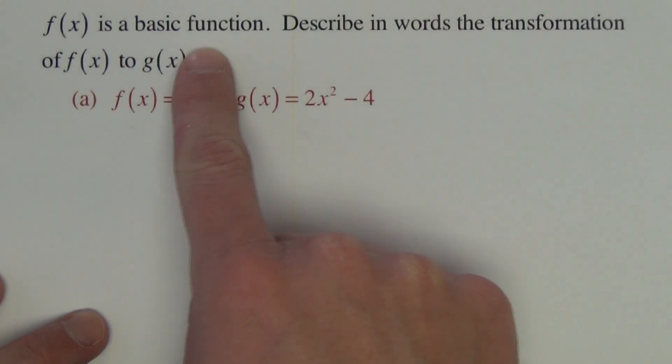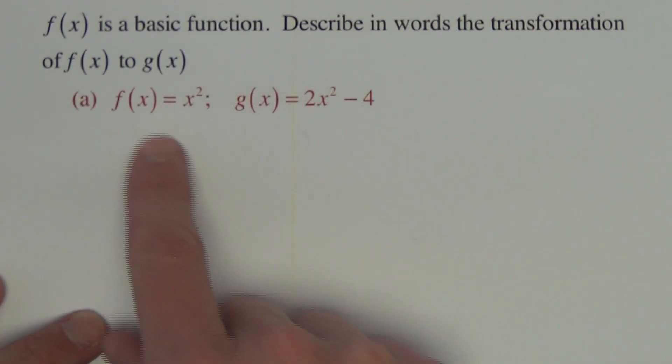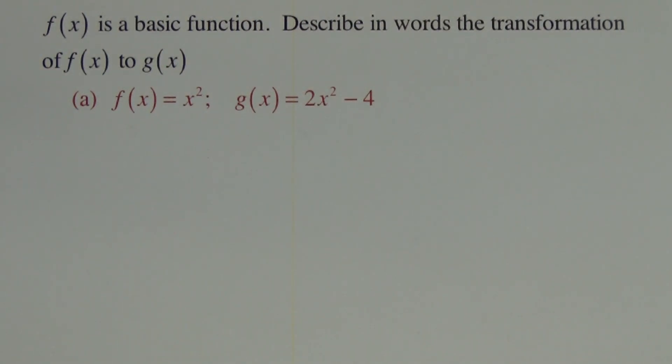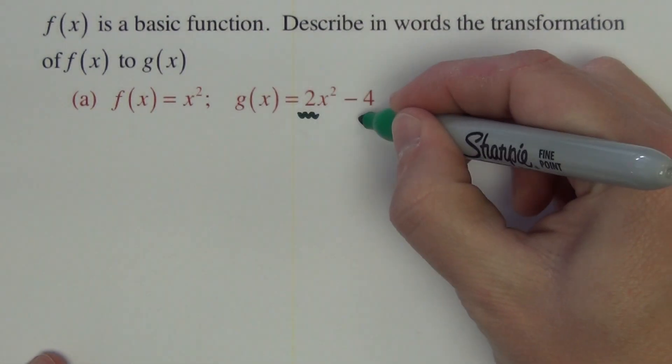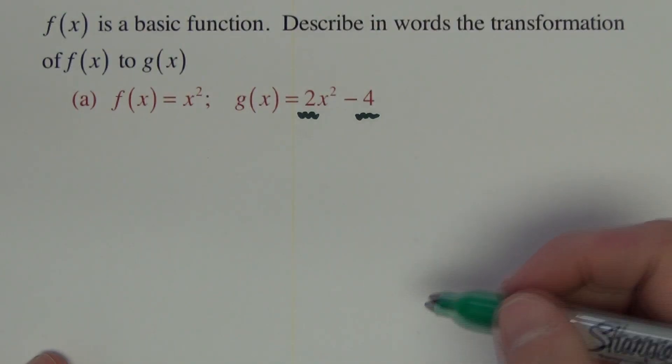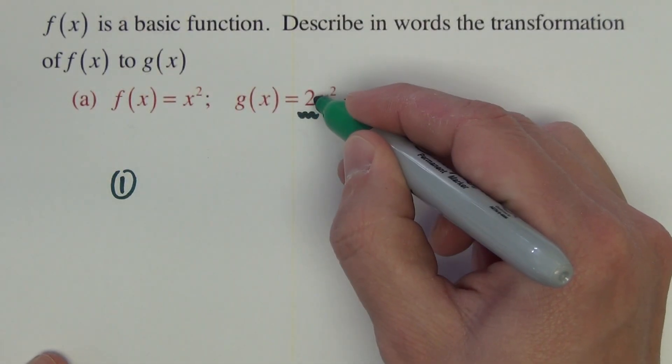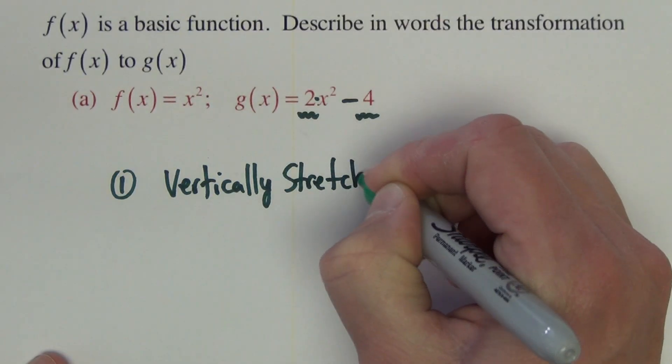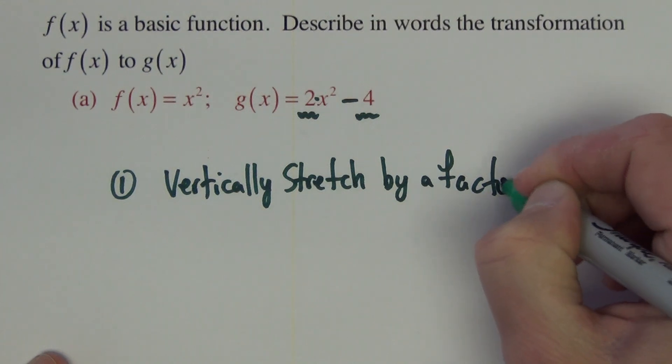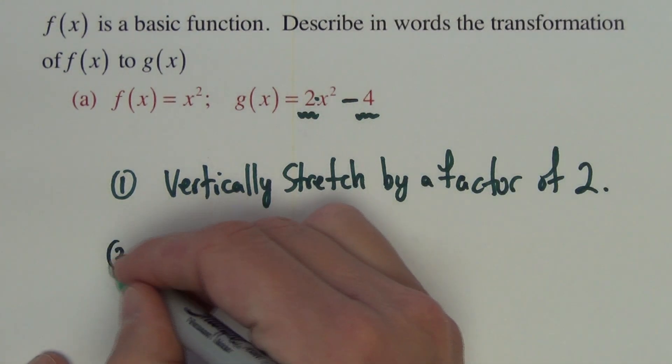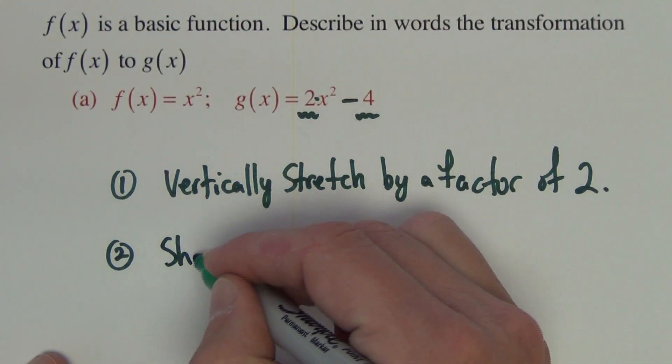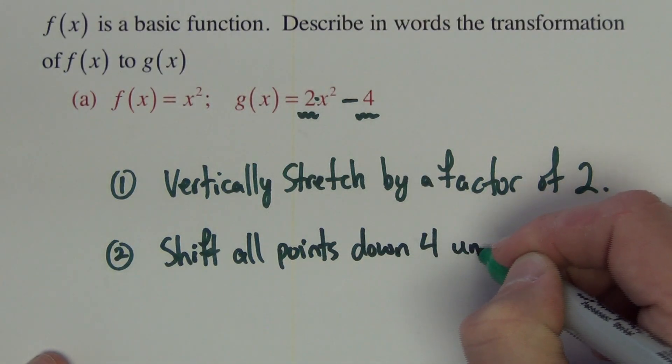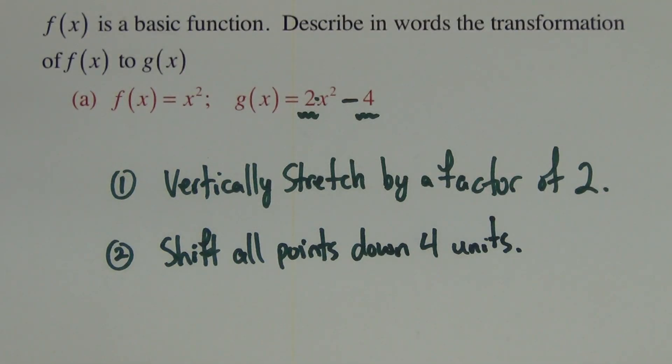This first problem says that f of x is a basic function. Describe in words the transformation of f of x to g of x. Our basic function is x squared. Our new function is 2x squared minus 4. We have to be able to describe in words what the 2 and the minus 4 does to this function as far as transformations. The first thing I'm going to do is the 2, because I'm going to multiply before I subtract. The 2 is going to vertically stretch by a factor of 2. The second thing I would do is the minus 4, and that minus 4 is going to shift all points down 4 units. So there's our transformation on that first one.